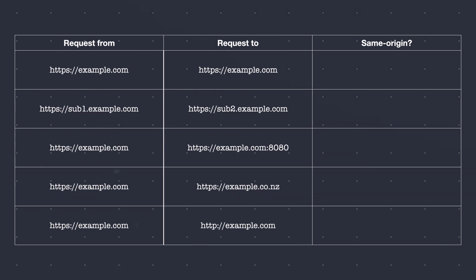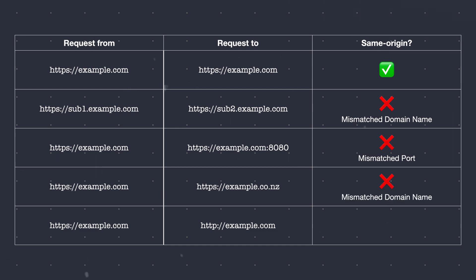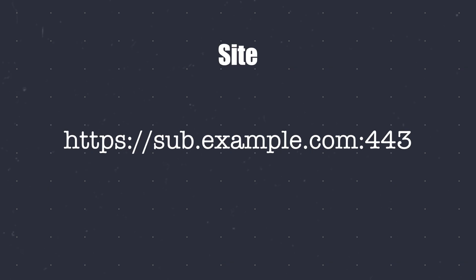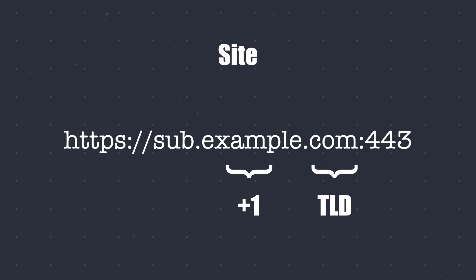Let's have a look at a few examples. You can pause the video here to check if you can identify same and different origins. Now let's understand what is meant by a site. In our context, we will define a site as the top level domain plus one additional level of the domain name. This is also known as the TLD plus one.